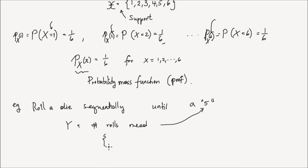The values y could take are: you could roll a 5 on the first trial. Or maybe you don't roll a 5 in the first trial, but then you do in the second one — in that case, y would be equal to 2. If you do not roll a 5 in the first and in the second, but you do in the third, y would be 3. It could be 4, 5, 6, 7, and so on.